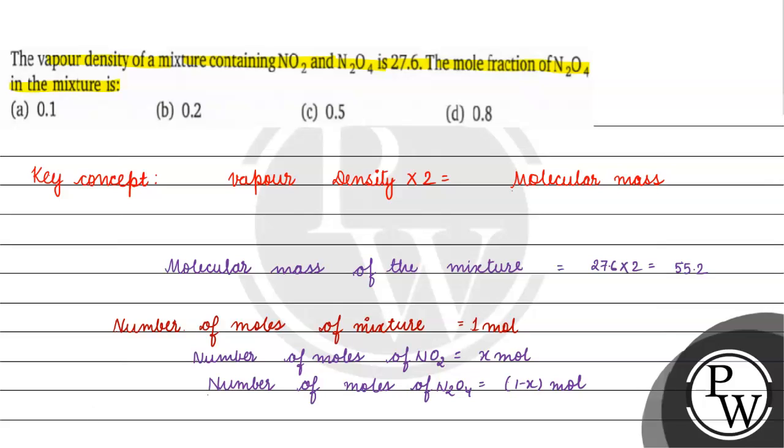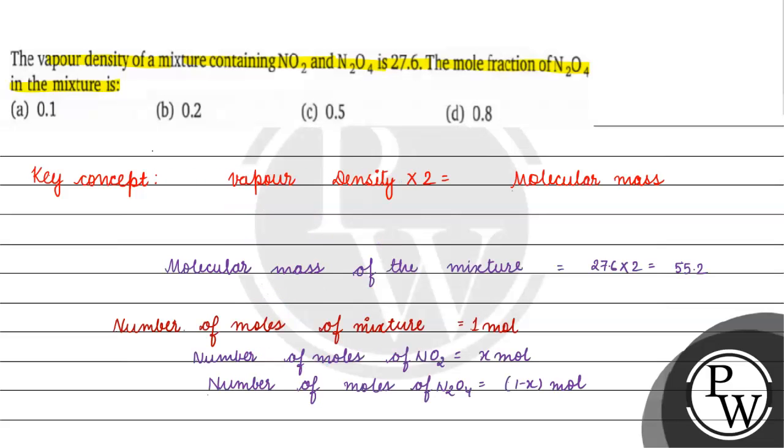We need to calculate mole fraction of N2O4 which will be 1 minus x. Number of moles is 1 because total moles of mixture we took was 1. Mole fraction is number of moles by total number of moles, which comes to 0.2. Coming back to the question, correct answer for this question will be option B. I hope you understood it well. Thank you and all the best.